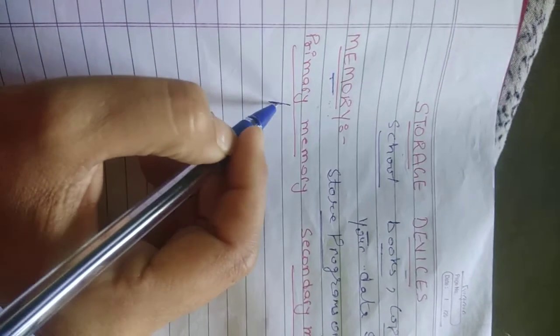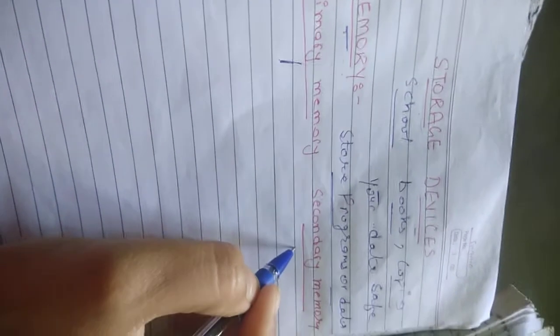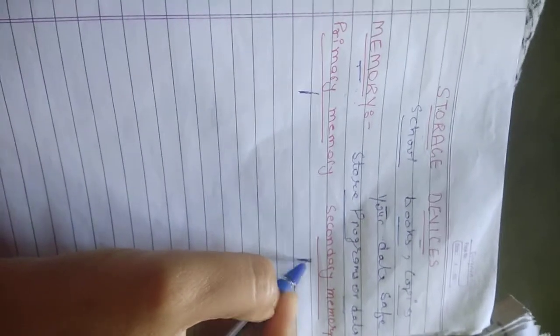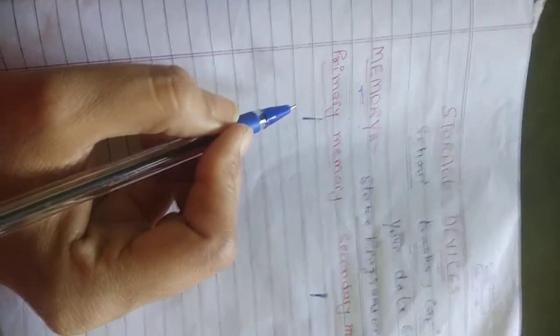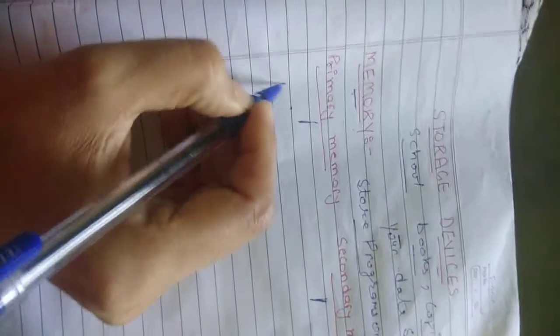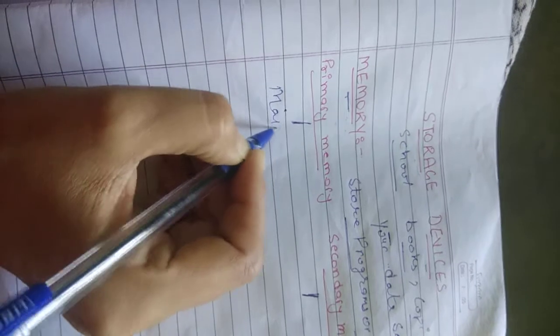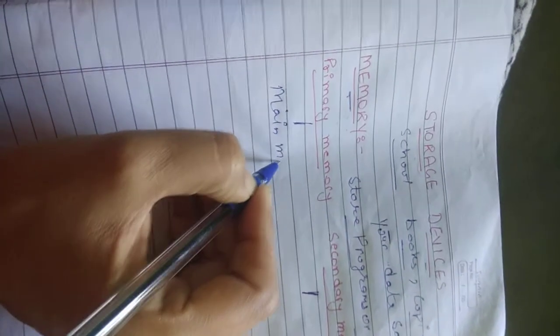We have two types of memory. First one is the primary memory and second one is secondary memory. First we will discuss about the primary memory. Primary memory is also called main memory.